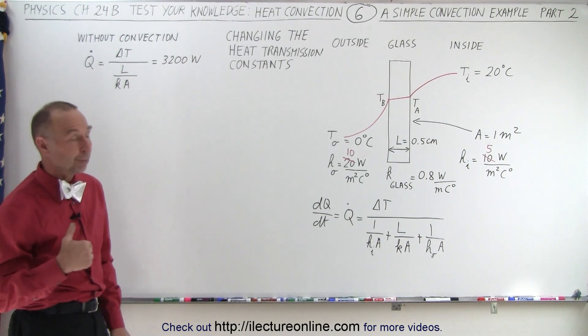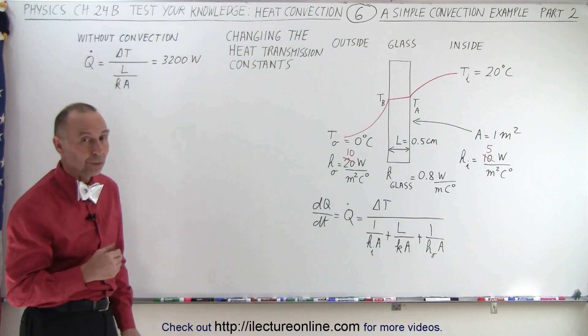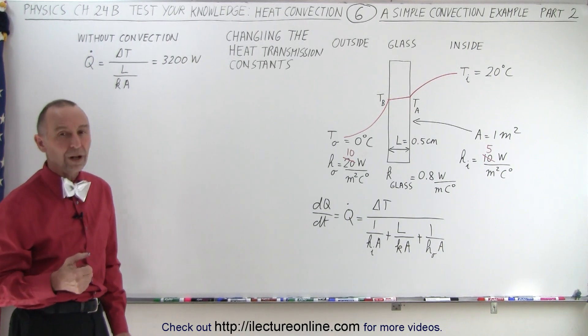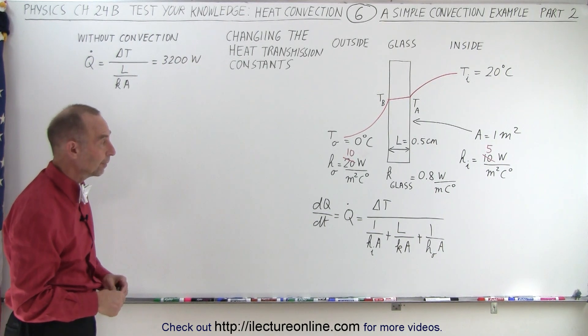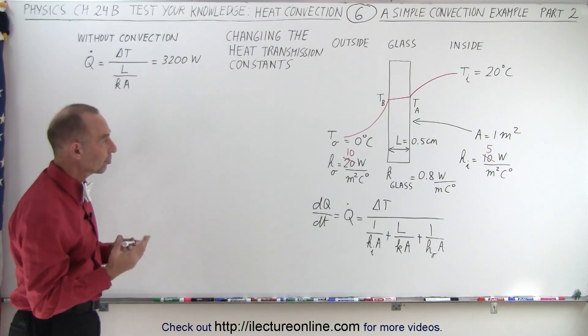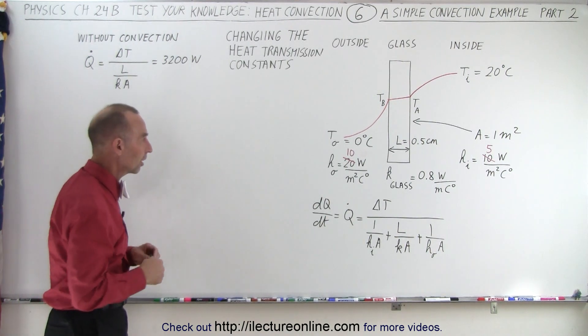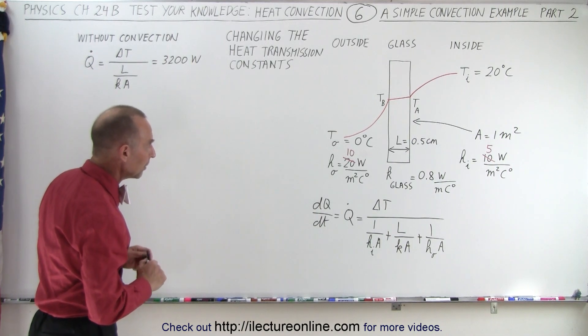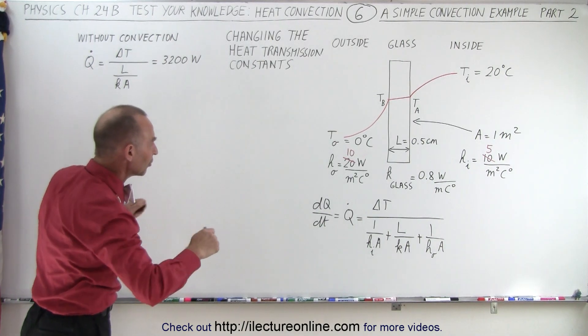Remember on the previous problem, we had the amount of heat traveling to the window equal to 128 watts, that's 128 joules per second. So what does it do when we change those convection constants or heat transmission constants because of convection? All right, let's go ahead and calculate the same result again.